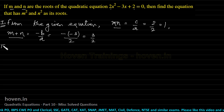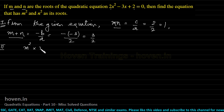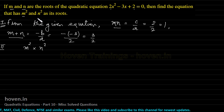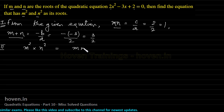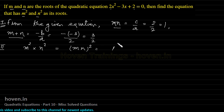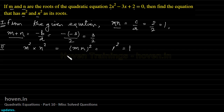The second step is to calculate the value of m²·n², the product of the roots of the equation we need to construct. m²·n² = (m·n)² = 1² = 1. This will always be available and ascertainable because we can obtain m²·n² directly from m·n.